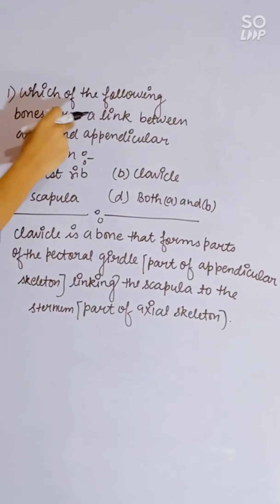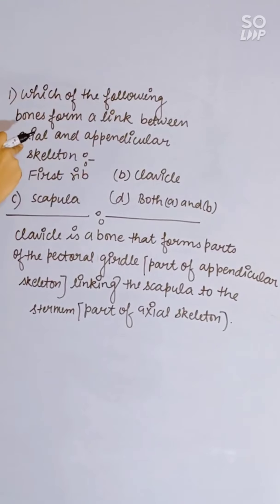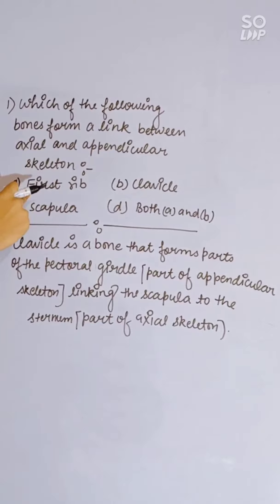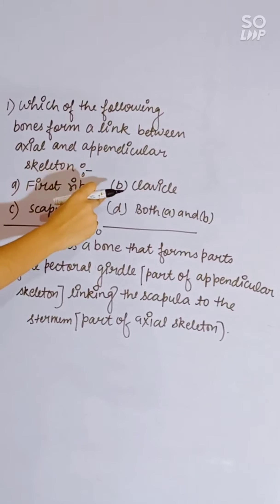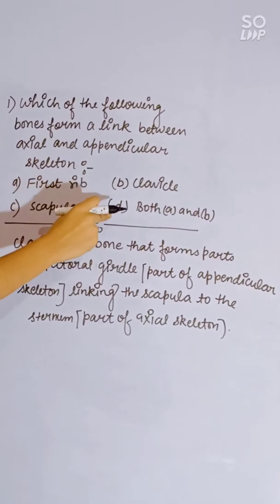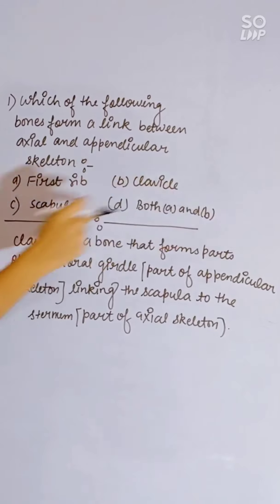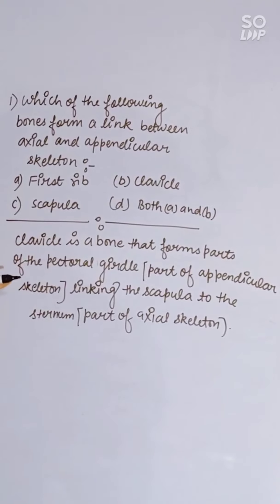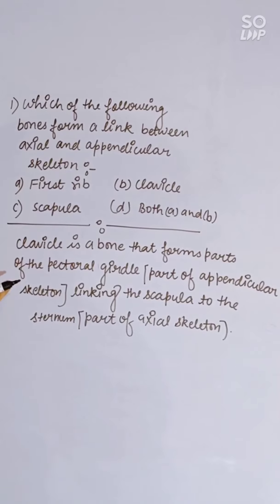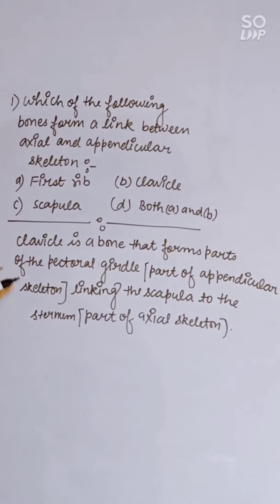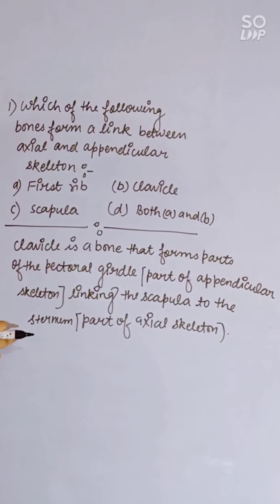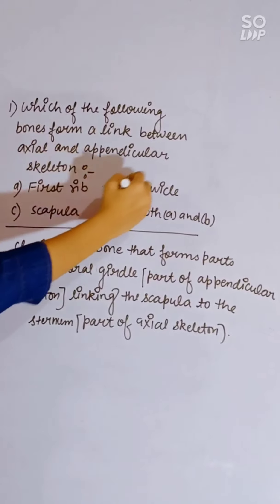Which of the following bones forms a link between the axial and appendicular skeleton? Options: first rib, clavicle, scapula, or both A and B. The clavicle forms part of the pectoral girdle, linking the scapula to the sternum. Correct answer is B, clavicle.